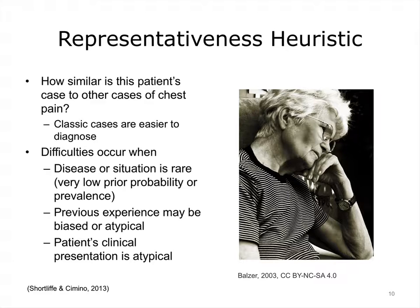The first cognitive heuristic is the representativeness heuristic. Consider a patient who is having a heart attack — you might visualize a middle-aged overweight man who smokes. However, if the patient is an old woman who is not grossly overweight, the clinician tends to compare how similar the case is to their mental image of others with the same disease. Difficulties occur when the disease is rare or has a very low prior probability, when the clinician's previous experience is biased or atypical, or when the patient's clinical presentation is atypical.